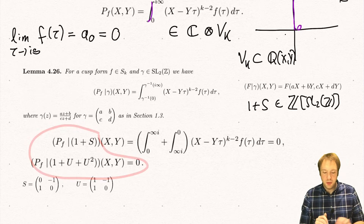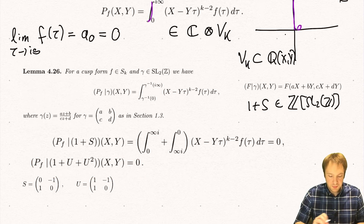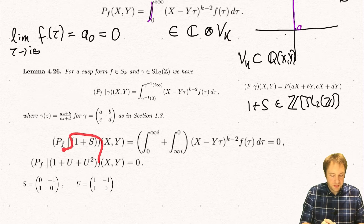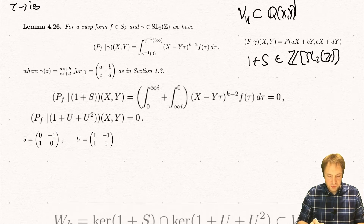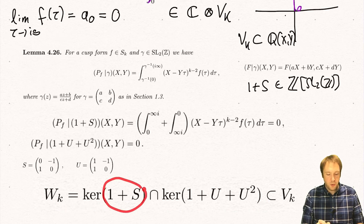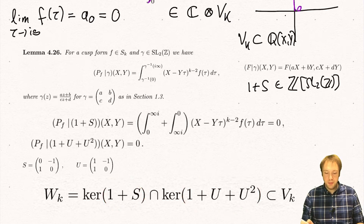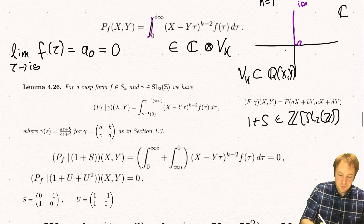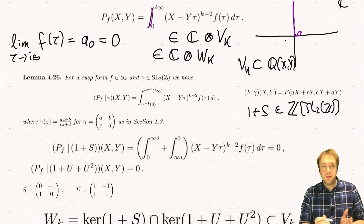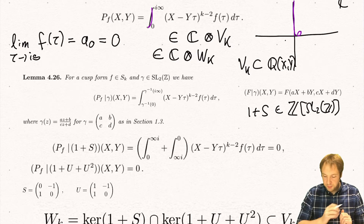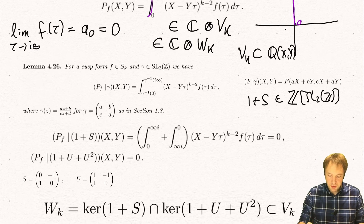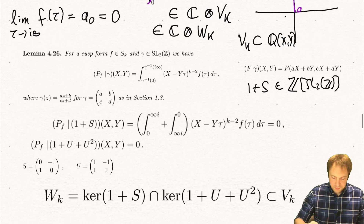We have these two equations, and therefore this motivates us to define a subspace of Vk: those polynomials which vanish exactly under these two actions. This is usually denoted by Wk — the intersection of the kernel of the action of 1+S and the action of 1+U+U². In particular, these period polynomials are elements in C tensor Wk. It could be that maybe these period polynomials satisfy more relations, but as we will see, this is exactly the only relation satisfied by these period polynomials, and this we will make precise in a few seconds.